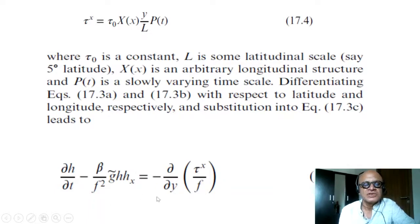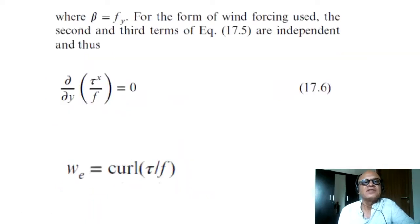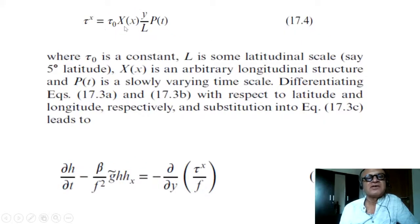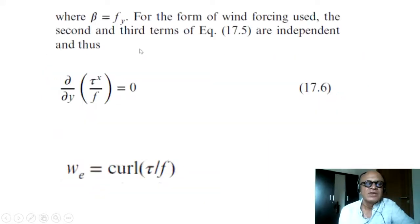If you divide by βy, this y disappears, so then d/dy of τx/f will be zero. These two terms then become independent of each other. That's the key. For β, which is the meridional gradient of f, we end up with d/dy of τx/f equal to zero. This also means that on the equator, Ekman pumping is going to be zero. So you have no problem creating the Ekman transport across the equator.